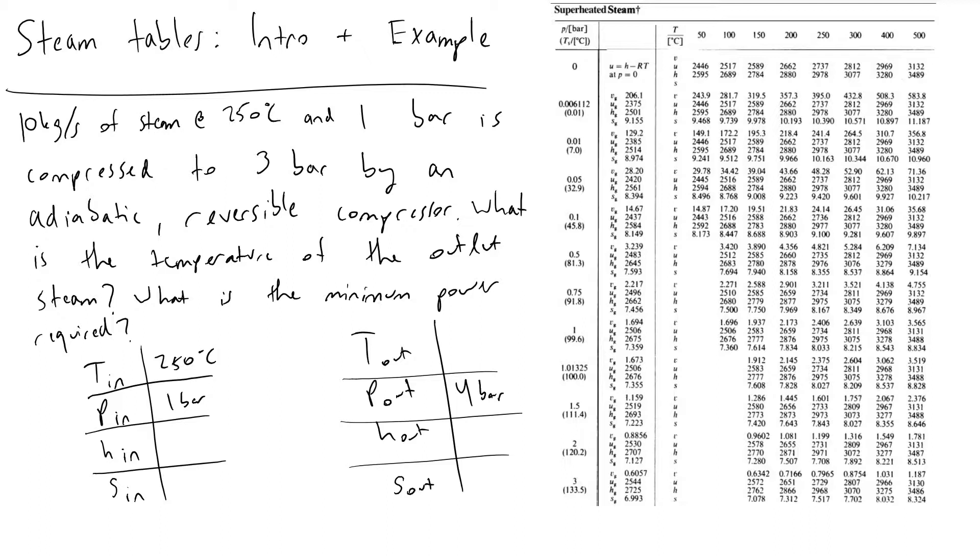To begin with, steam tables are—there are two main types: we've got saturated steam tables, and with a saturated steam table what you do is you put in a temperature or a pressure and you get out the saturation properties of the steam at those conditions. That's not the kind of steam tables we're going to be using in this example. We're going to be using superheated steam tables because the steam already exists in one phase and the temperature is sufficiently high and the pressure is sufficiently low such that we don't run the risk of the steam condensing.